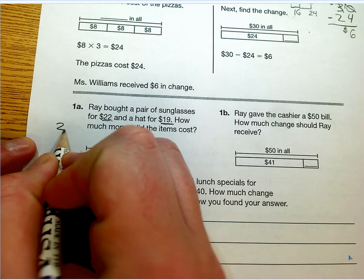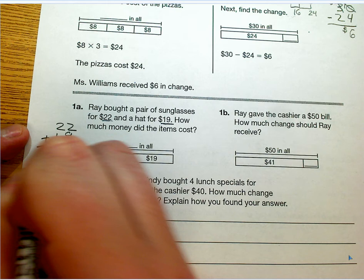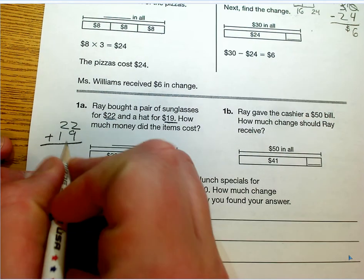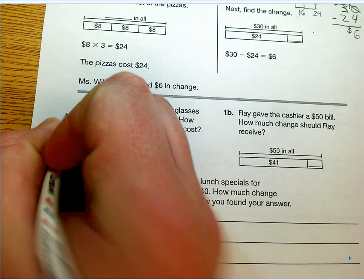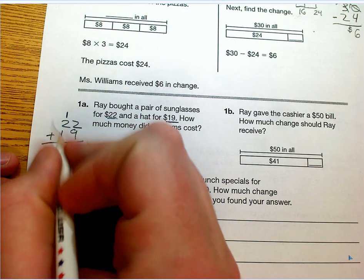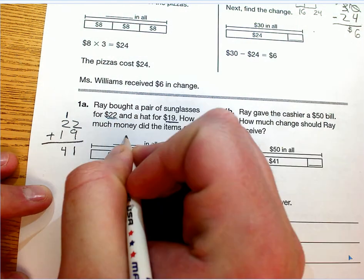Twenty-two plus nineteen. I'm going to stack those up to the side. Two plus nine is eleven, put the one down there, carry this one in the tens column, and then add up my tens column, two plus one plus one is four. So I have forty-one dollars in all.